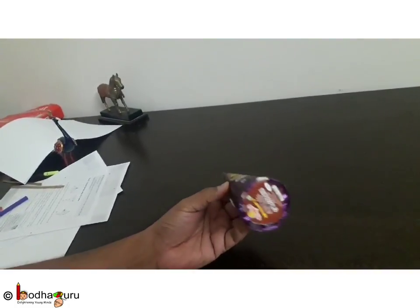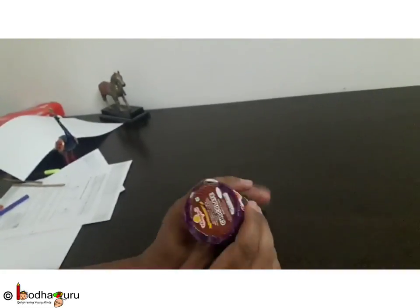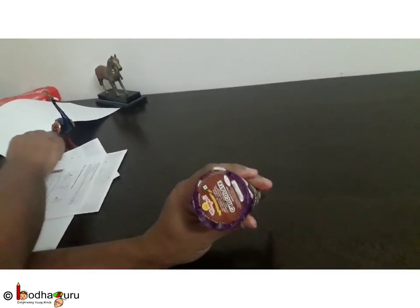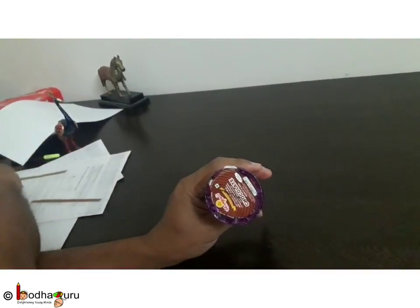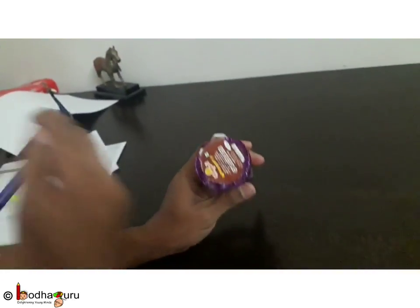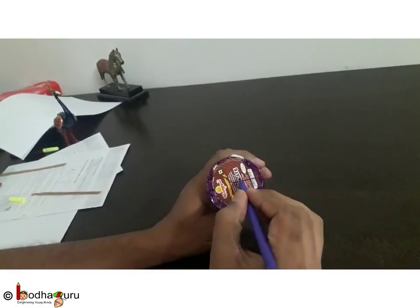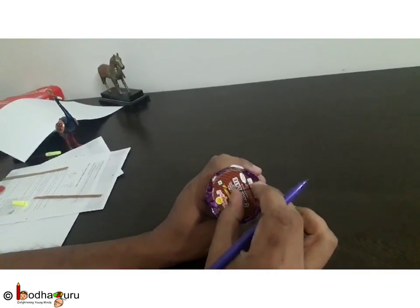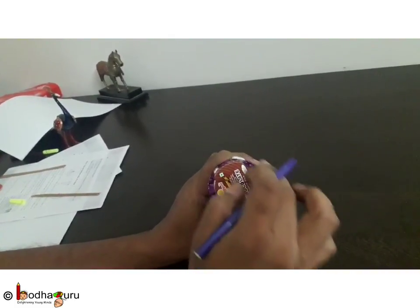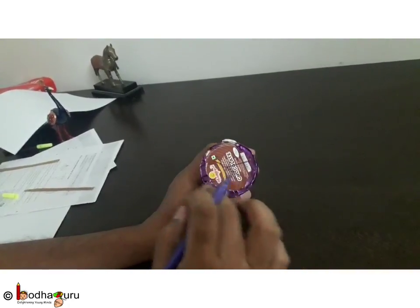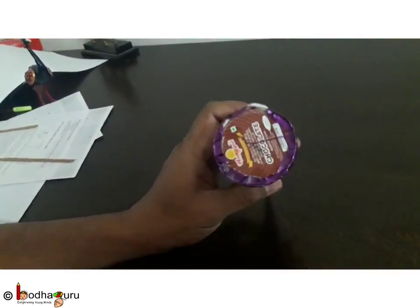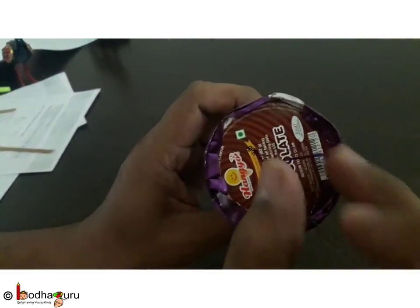A cone is represented by three parameters. One is the radius of the base of the cone. So this is the radius of the base, this is the circular area of the cone. This is the circular face of this cone. So this radius is one aspect of this cone.